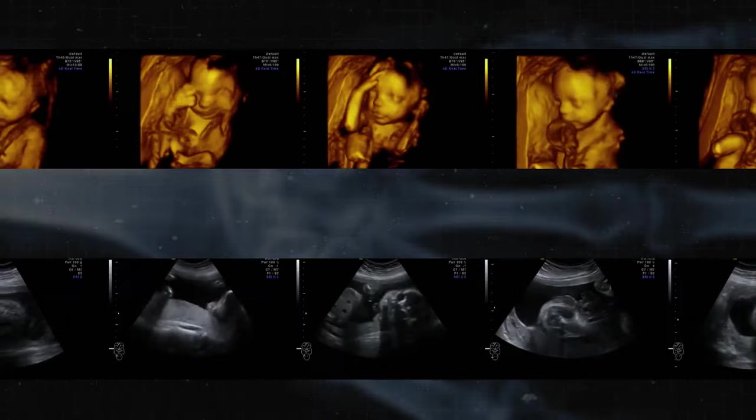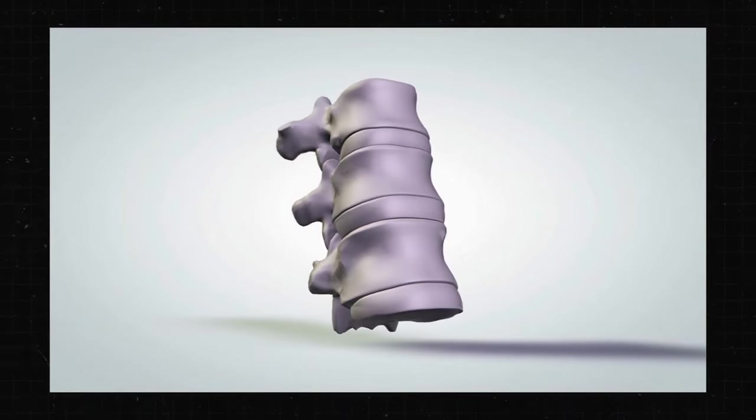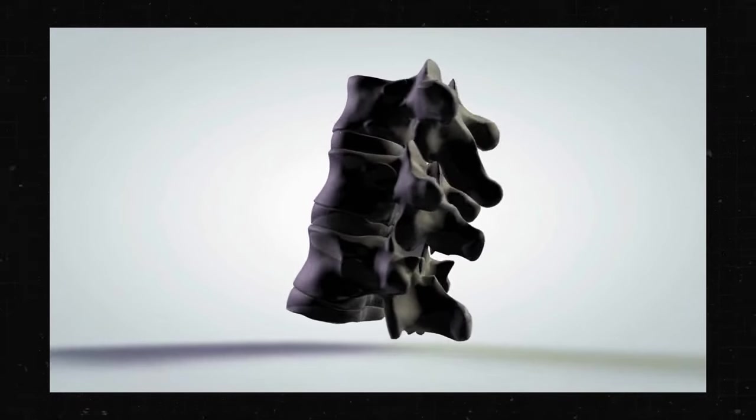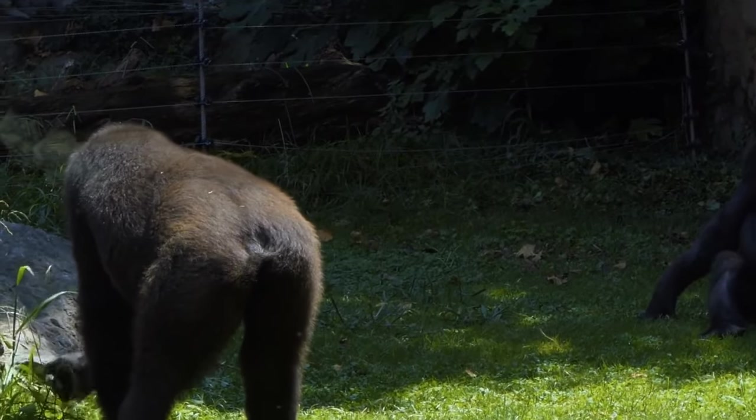When you're still in your mother's womb, you also have a mini-tail. But as you grow, it disappears, and those tiny vertebrae become your tailbone or coccyx. Humans and our ape cousins don't have tails like other animals.